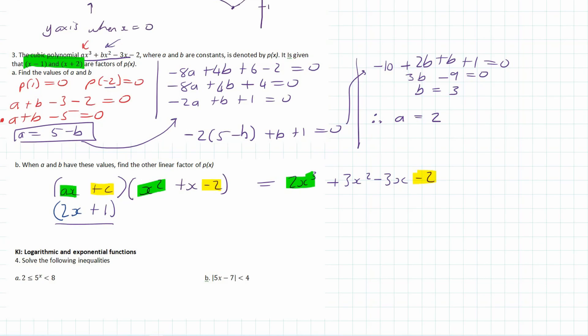The last linear factor is (2x plus 1). To verify: if 2x plus 1 is a factor, the root is minus one half, so p(minus 1/2) should equal 0. Substituting minus one half into the formula gives 0 — confirmed on the calculator. So we are correct.